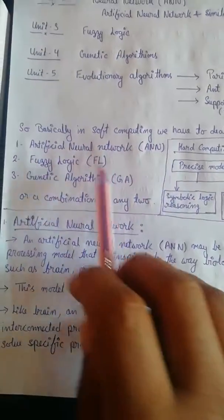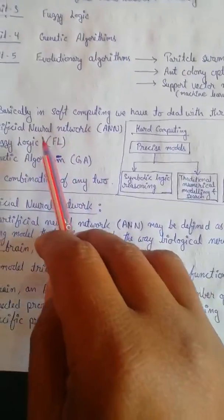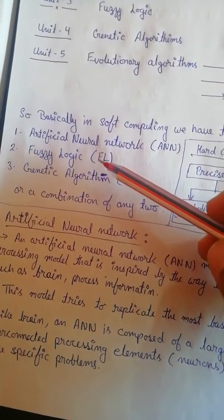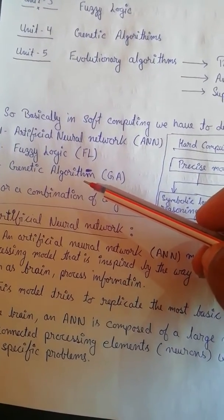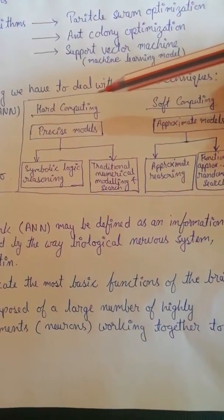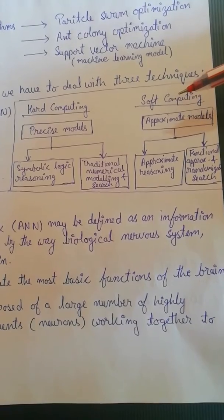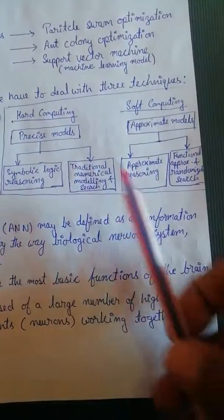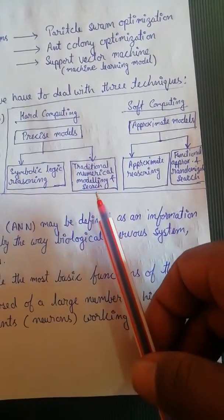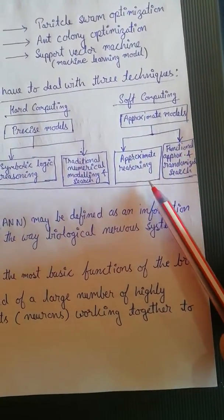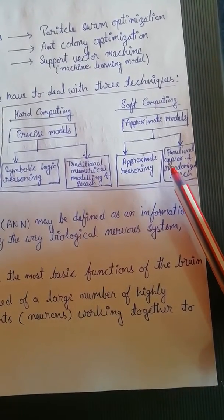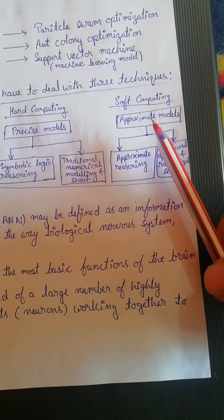Regarding artificial neural network — basically, if we talk about soft computing, soft computing deals with these three things: artificial neural network, fuzzy logic, and genetic algorithms. There are two types of computing: one is hard computing and one is soft computing. In hard computing we have very precise models, symbolic reasoning, traditional numerical modeling and search. In soft computing we have approximate reasoning, a functional approach, and randomized search.